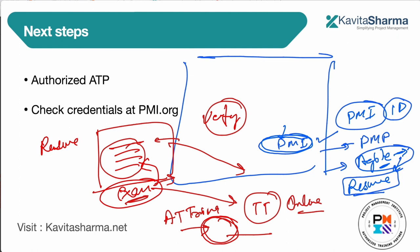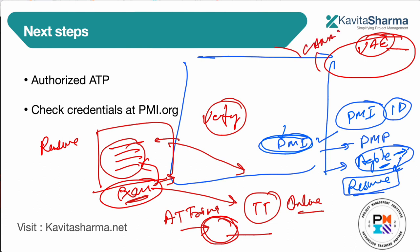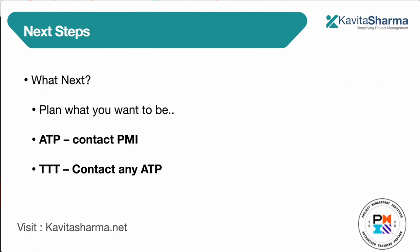How much money you make as a trainer depends on how much sales you can do and which region you're in. In the UAE, almost every middle manager needs to become a PMP. In Canada, the USA, or Europe, PMP training prices are very high. Do your research on region-specific market conditions, build your connections, and you should be able to create a good, sustainable source of income.